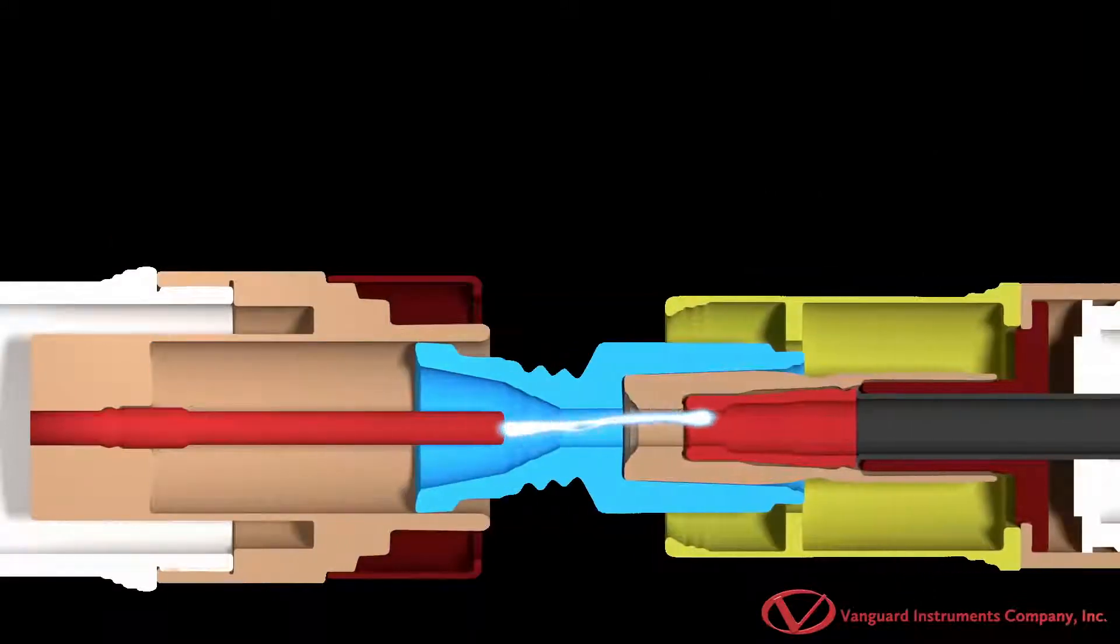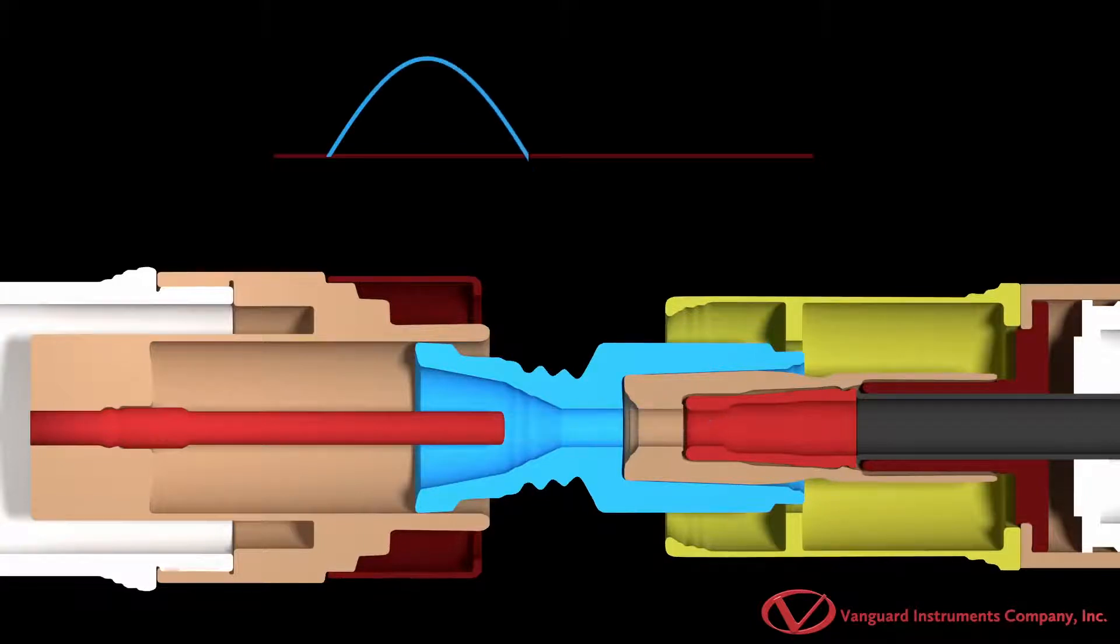When the contacts open, an arc is created due to current interruption. An AC arc extinguishes at every zero current level but reignites immediately after crossing the zero point due to the presence of voltage across the open contact.